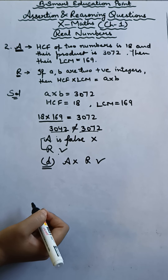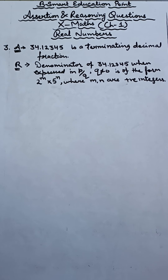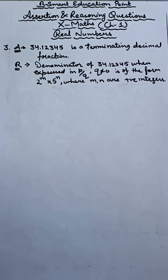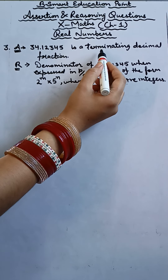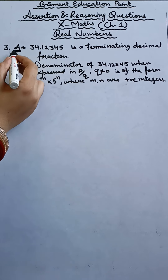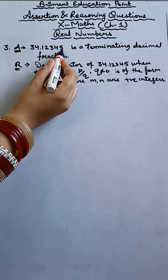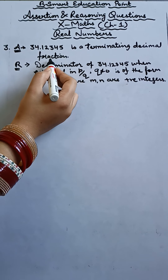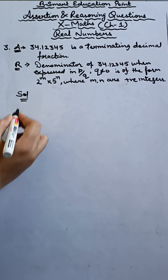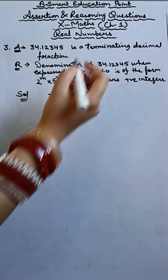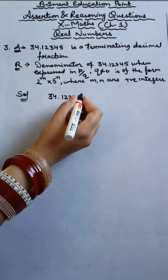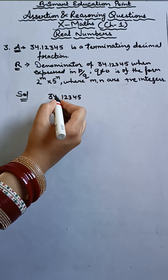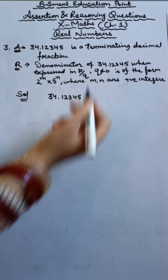Let's start doing the third one. This is our third assertion and reasoning. First we did irrational numbers, second was HCF-LCM, and third is on terminating and non-terminating decimal expansion. What is the assertion here? A decimal number is given: 34.12345 is a terminating decimal fraction.